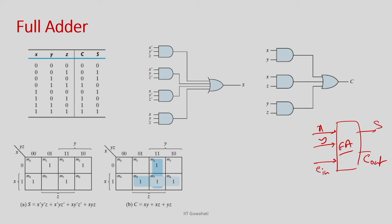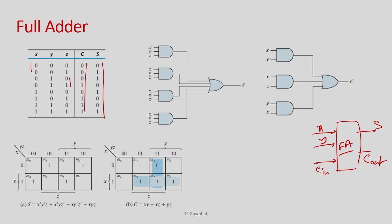I can extend the truth table of the half adder: for each combination of x and y (00, 01, 10, 11), the carry in can be 0 or 1, giving 8 possible scenarios. For example, adding three 1s gives sum 1 carry 1; adding 0+1+1 gives sum 0 carry 1 (that's 2 = binary 10); adding 1+0+1 is also 2, so carry 1 sum 0.